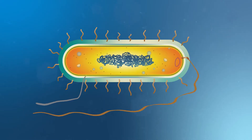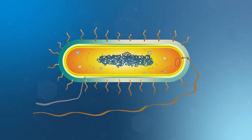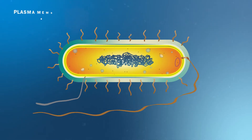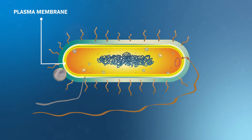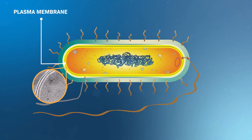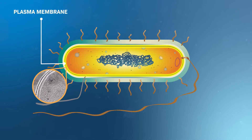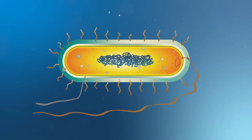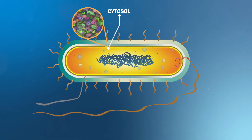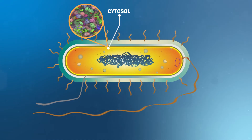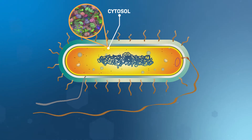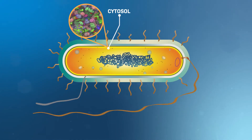Beneath the cell wall is a semi-permeable barrier called the plasma membrane, which regulates what travels in and out of the cell. The cytosol contains all of the water and nutrients the cell needs and makes up the majority of the cell's volume.